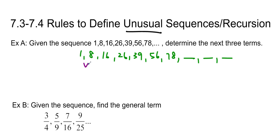Let's find the first differences. 8 minus 1 is 7, 16 minus 8 is 8. Remember you're going sort of this way, right? So 26 minus 16, 39 minus 26, 56 minus 39, and 78 minus 56.